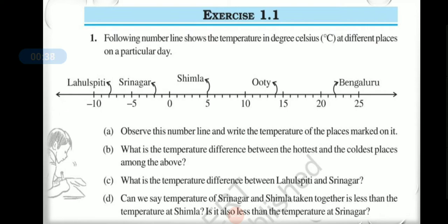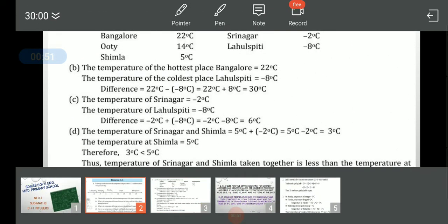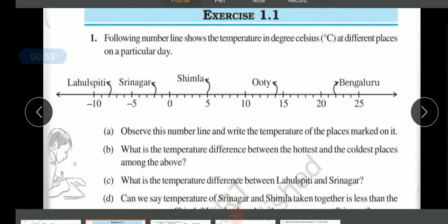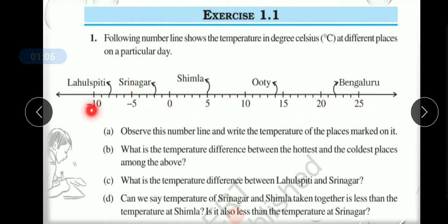At different places on a particular day. You can see this number line. The places shown are Shimla, Ooty, Bengaluru, and Srinagar — all different cities and areas — and their temperatures are shown on the number line.